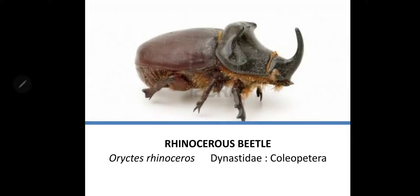Another pest is the Rhinoceros beetle. Its scientific name is Oryctes rhinoceros, and it belongs to family Scarabaeidae, order Coleoptera. It is widely distributed in Asia, Australia and Pacific Islands, and is reported from all regions where coconut is grown. It also attacks coconut, oil palm, date palm, sugarcane, banana, pineapple, papaya and many other crops.